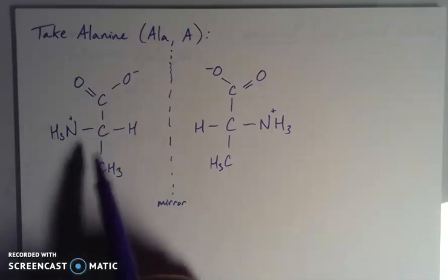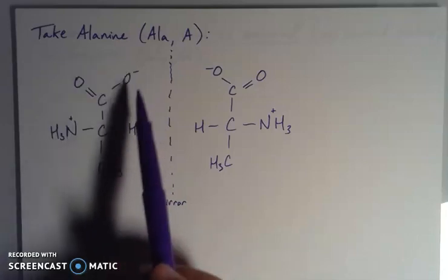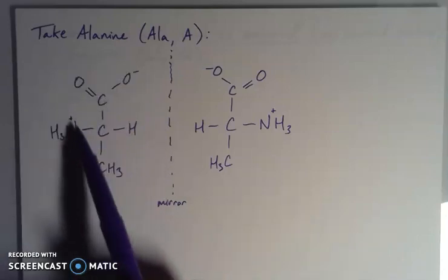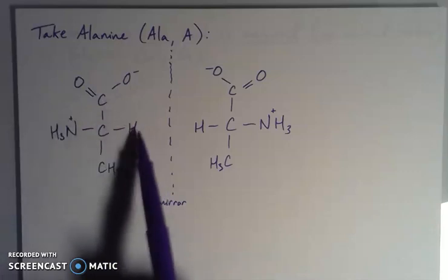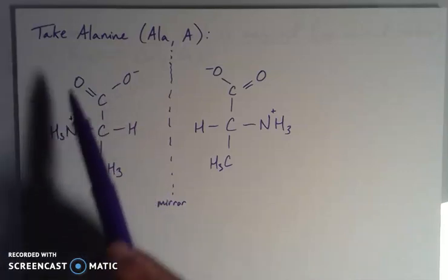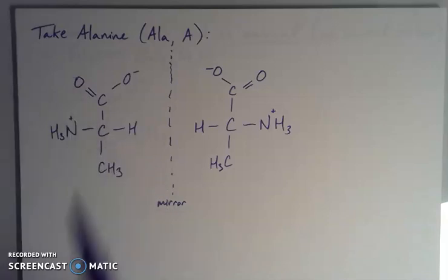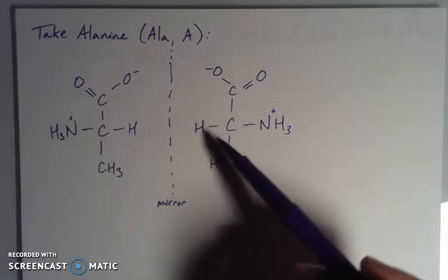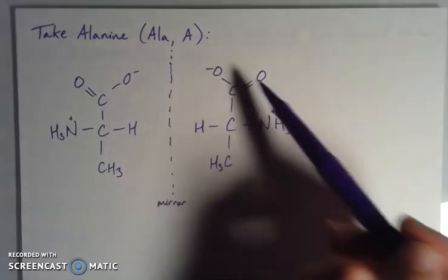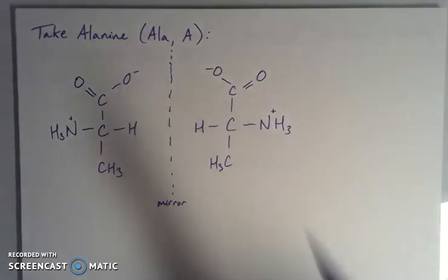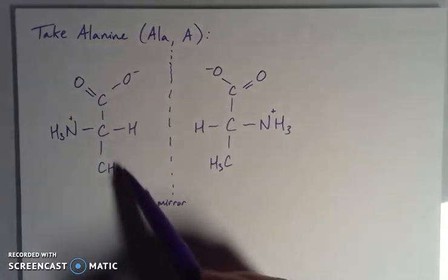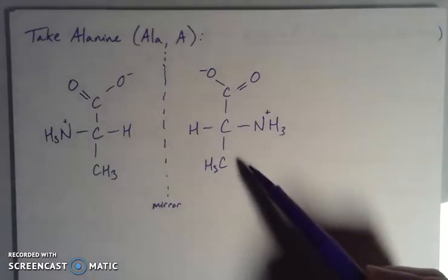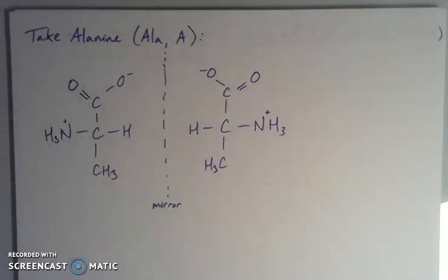If I identify my alpha carbon, which again is going to be the one that has the carboxylic acid group, the amine group, and a hydrogen - at least those three component pieces - this is my alpha carbon. And same here, I have my amine group, my carboxylic acid group, my hydrogen, here's my alpha carbon. My R group here is just this methyl that is sticking off at the bottom - that's that side group or side chain.